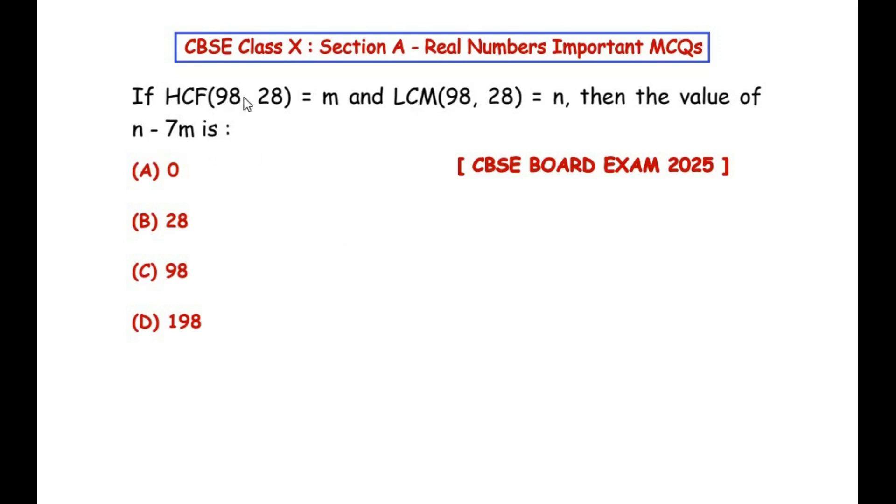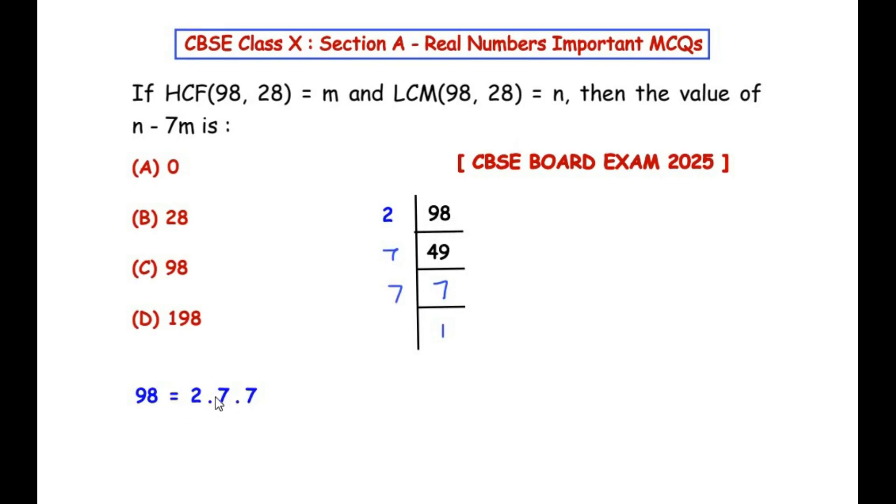The first step is prime factorization. Let me start with 98. We need to use prime factors only. The smallest prime number is 2, and it divides 98: 2 times 49 is 98. Now 49 goes in the table of 7, that is 7 times 7 gives us 49, and finally 7 times 1 is 7. So the factors of 98 are 2 times 7 times 7.